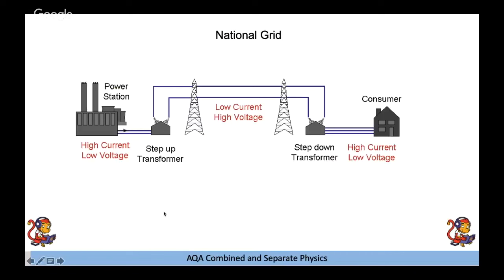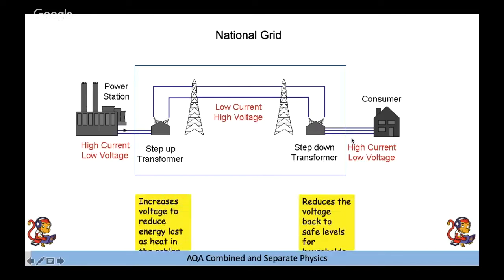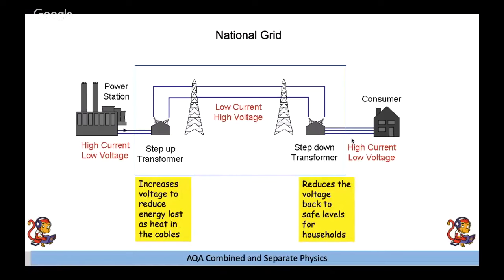The national grid is a series of cables and step-up and step-down transformers linking power stations to homes. Step-up transformers increase the voltage to reduce energy loss in the cables - remember 'step up, U is next to V, so it increases voltage.' Step-down transformers then reduce the voltage back to a safe level for use in homes. Power stations and houses themselves are not part of the national grid.